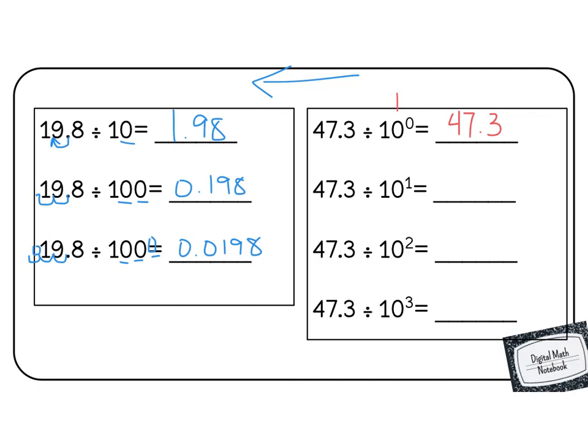Now we do 10 to the power of 1, which has 1 zero, and it's going to move 1 place, so that's the number 10. And it's going to go 1 place. Remember our exponent told us that, so our number would be 4.73.